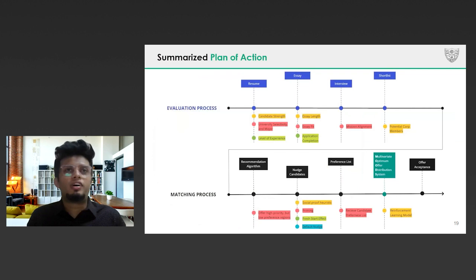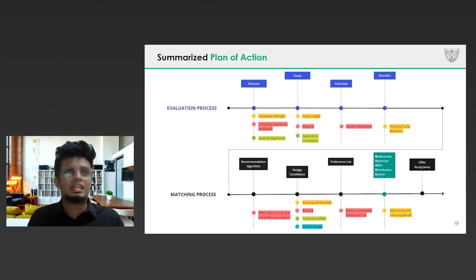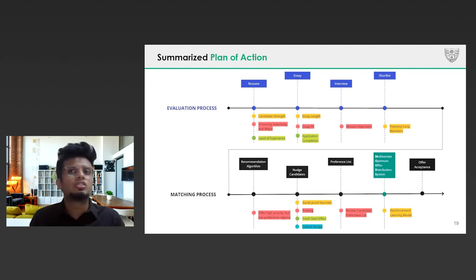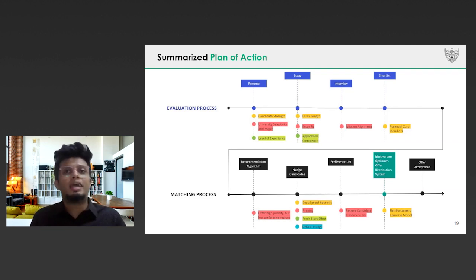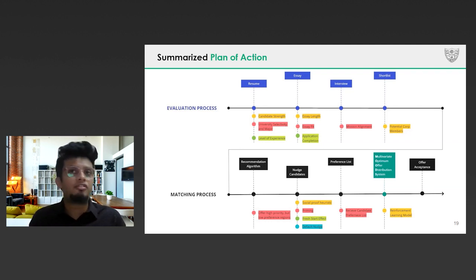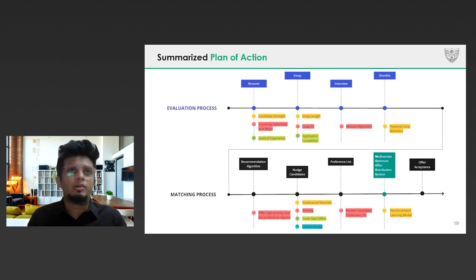Consolidating all of our insights so far, we now present the recommended plan of action to assign the best offers to potential core members. After the evaluation process conducted by TFA, the list of potential core members to whom offers have to be made is obtained. TFA can then use our recommendation algorithm to nudge candidates to make choices that result in acceptance and a positive experience through matriculation. After collecting the preference list, the multivariate optimized offer distribution system can be used to assign the most appropriate offer, suiting both TFA and the candidate's requirements. We hope that these recommendations will serve as valuable additions to help TFA make their onboarding process more holistic, optimized, and consistent, ultimately leading to more equitable education and academic and personal growth of millions of students across America. Thank you.